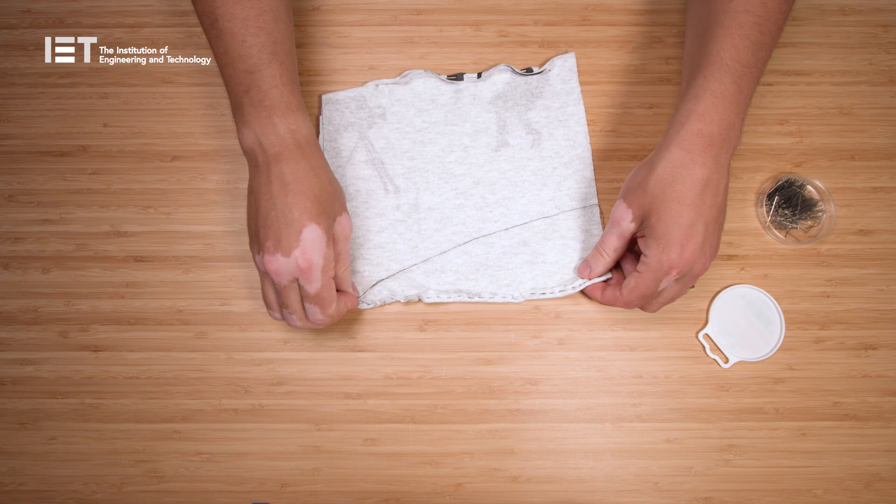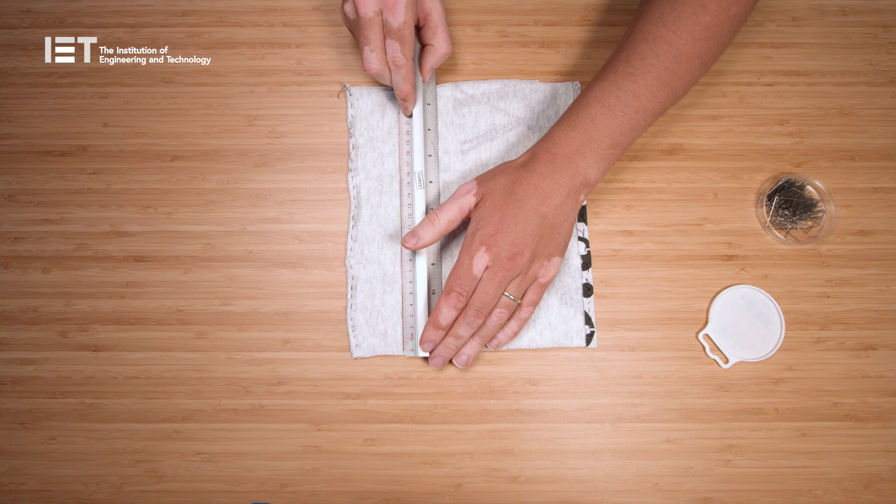Once you've sewn the two ends, flip the fabric over, and now on the other sides we haven't sewn, mark 1.5cm along each side and draw a line.